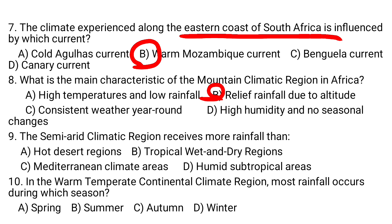So relief rainfall due to altitude is confirmed as the answer. Question number nine: The semi-arid climate region receives more rainfall than the hot desert regions. So the answer is A.